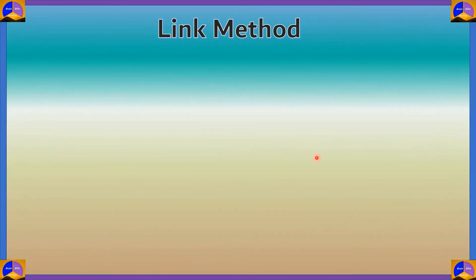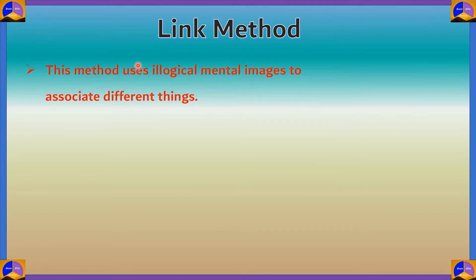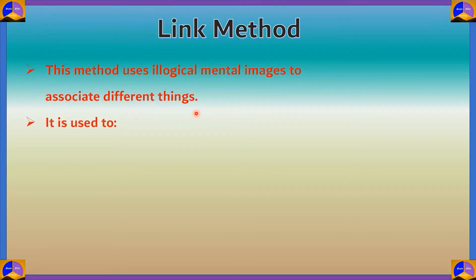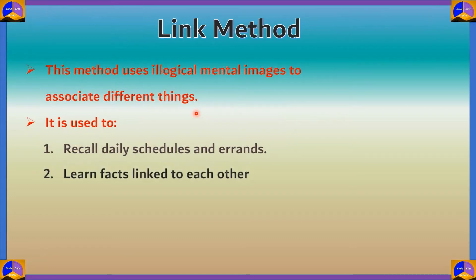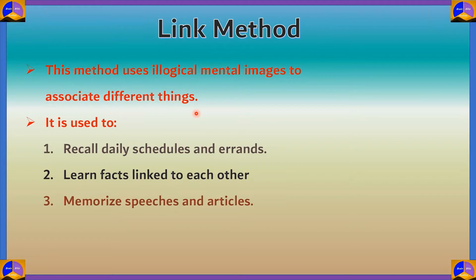How was the test? It was really hard without an untrained memory. We'll put a stop to that using the Link Method of Memory. It is especially useful in memorizing anything in a particular sequence. What it basically does is use illogical mental images to associate different things. It's proven that when you think of something illogical, it gets stuck in your brain more. You can recall daily schedules, errands, facts linked to each other, and memorize speeches and articles using the Link Method.